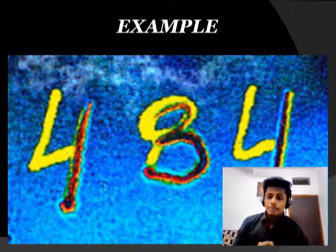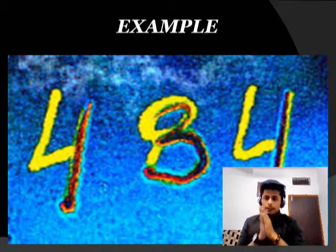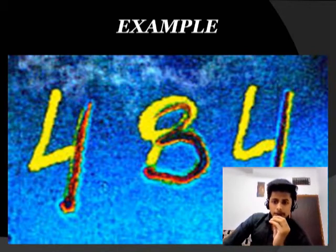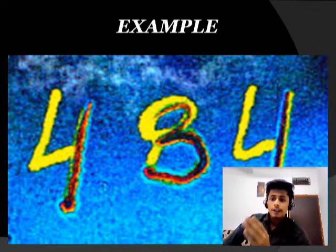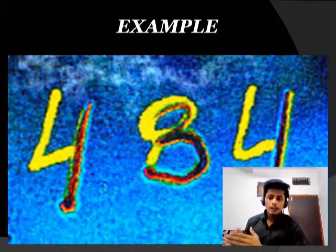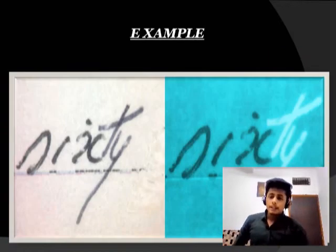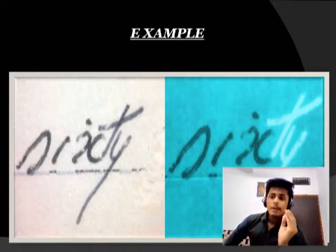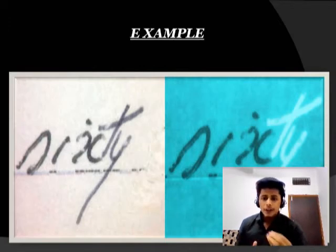This is an example where 1, 3, 1 is converted into 4, 8, 4. There are different pieces of pen through which we can find out which part is different and which was written before. This is another example in which the original was written as 6 and someone made it 60.